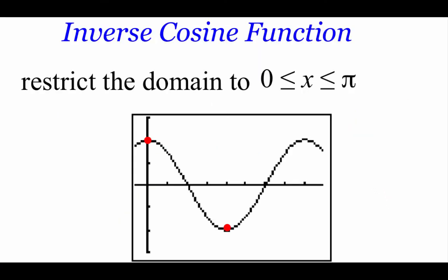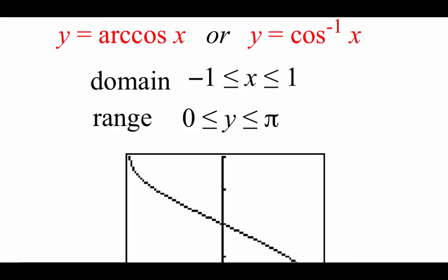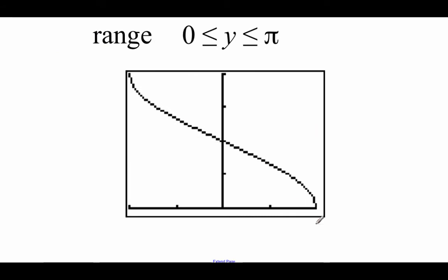Next we're looking at our inverse cosine function. In order to find the inverse for a cosine, we're going to restrict the domain to be between 0 and pi, looking at just that small portion of the graph. Similar to our inverse sine, we've got a couple of ways of representing this: arc cosine, or inverse cosine using the negative first power. The domain for inverse cosine is between negative 1 and positive 1, and the range values are going to be between 0 and pi. Graphed on a calculator it would look something like this.